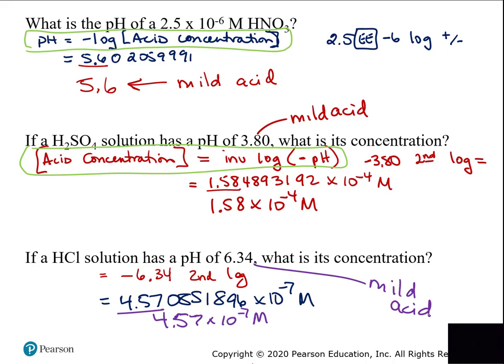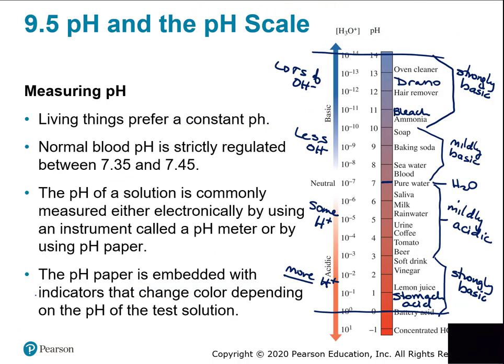To summarize: 0 to 3 is strongly acidic; 3 to 6.99 is mildly acidic; exactly 7 is neutral; 7.01 to 10 is mildly basic; 10 to 14 is strongly basic. Anything below 7 is an acid and anything above 7 is a base — seven is the cutoff.